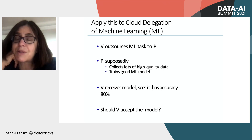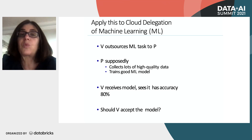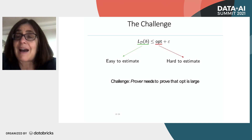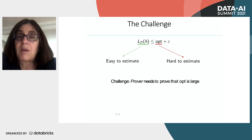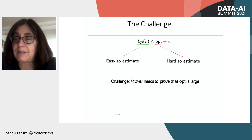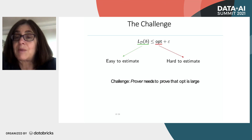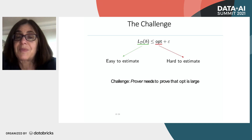What we want is for the verifier to accept only when the hypothesis H from the prover has a loss L_D(H) as close to the optimal quality as possible — not further than epsilon from optimal. It might be easy to estimate how well the hypothesis does, but not easy to estimate what's the best that can be done. The challenge is verifying you're not too far from the best.